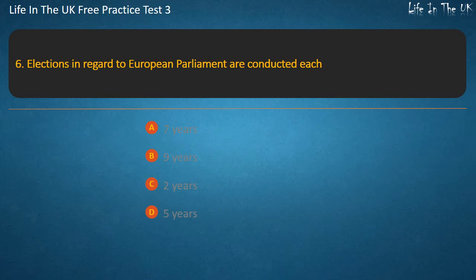Question 6. Elections in regard to European Parliament are conducted each — 7 years, 9 years, 2 years, or 5 years? Answer: 5 years.